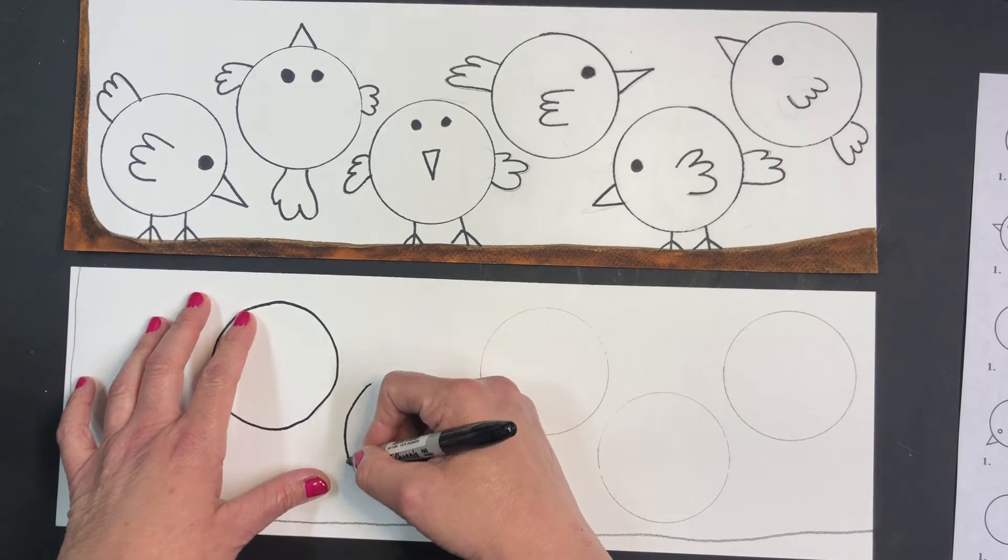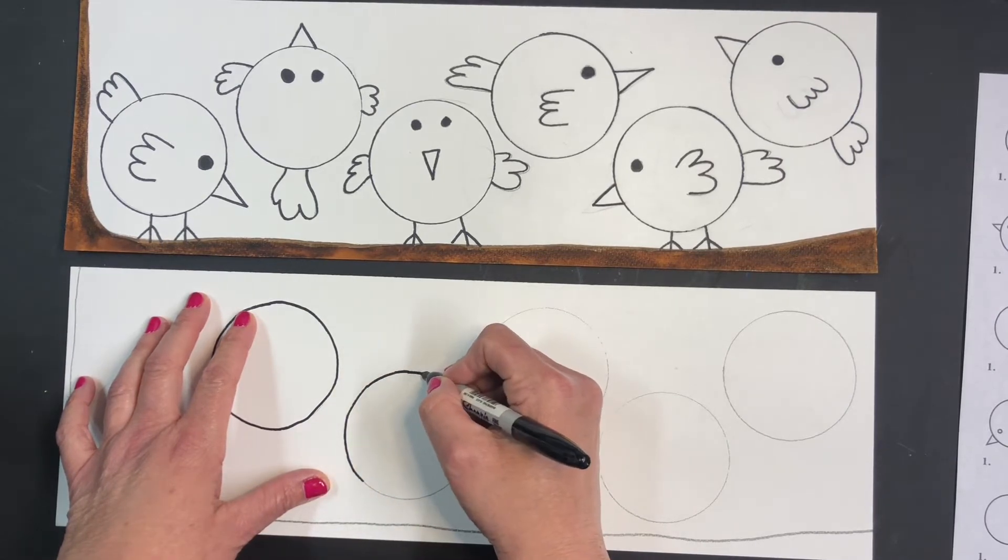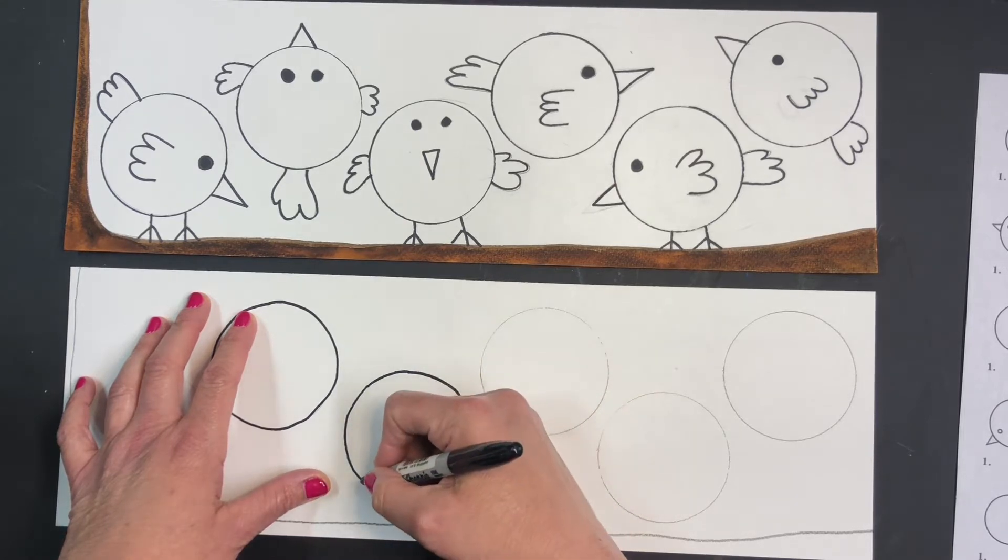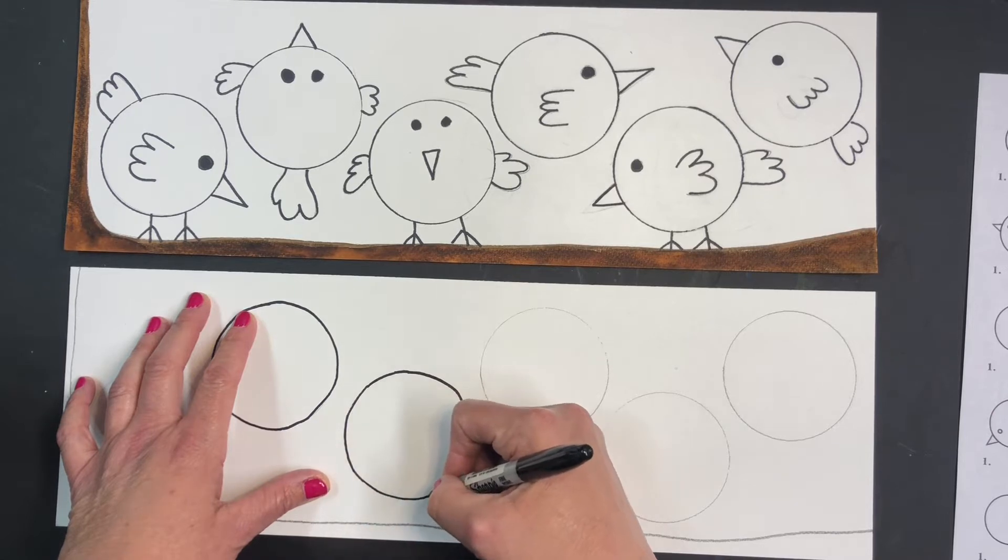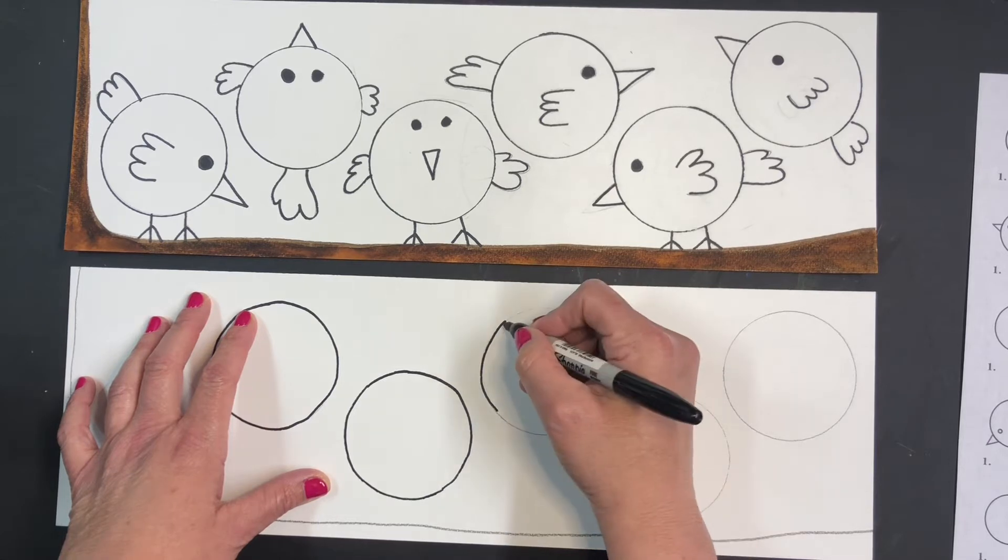Because we're going to be painting these birds. If you have paint at home, if not, you can use marker. And you want to trace them nice and smooth.